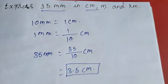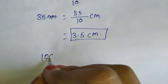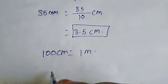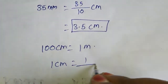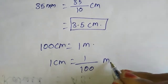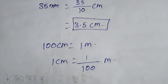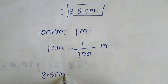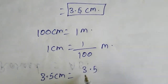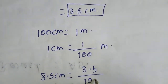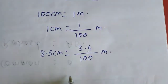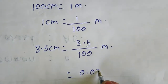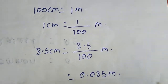Now I am going to express in meters. 100 centimeters equal to 1 meter, so 1 centimeter equals 1/100 meter. We have 3.5 centimeters, so 3.5 divided by 100 meters. We have one digit only, so we get 0.035 meter. This conversion from fraction to decimal you already know from sixth standard.